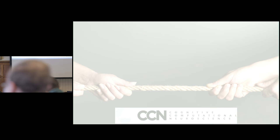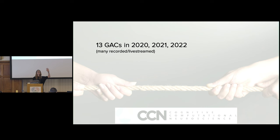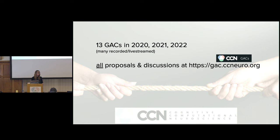We've actually had 13 GACs so far in the past three years - this is year four. A lot of these, because they happened during the pandemic, were recorded and live-streamed, so if you'd like today's event you can check out the previous ones from previous years. You can find all the previous proposals and discussions at the GAC website, GAC.ccneuro.org, and you can also participate in live or asynchronous communication about the GACs there in a forum style.